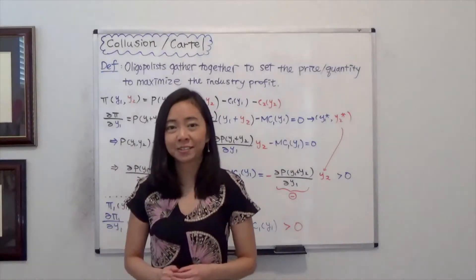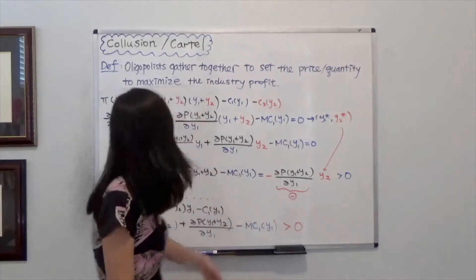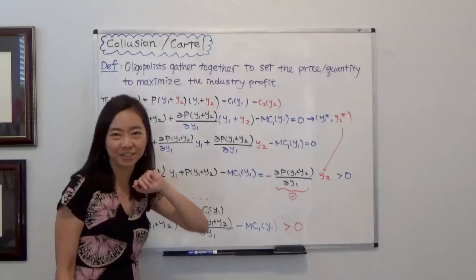Hello everyone, my name is Iris Franz with Johnny Warnum. Today we're going to talk about oligopolies, collusion, or cartel.